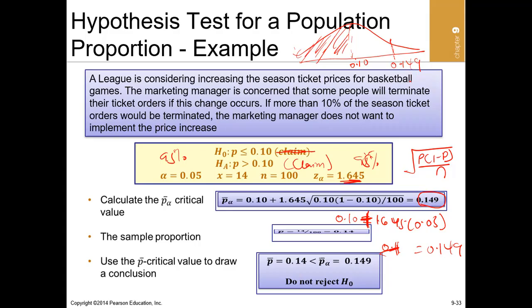Assuming that you get the sample proportion to be 0.14, it means that it falls within this region — 0.14 is less than 0.149. So we are going to accept the null hypothesis. The little above we can allow up to is 0.149, so if the actual sample proportion is 0.14, it falls within the region and we will accept it. I'm going to use the Z value approach to explain further to get the picture clearly.